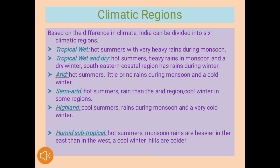The first climatic region is tropical wet: hot summers with very heavy rains during monsoon. Number two, tropical wet and dry: hot summers, heavy rains in monsoon, and a dry winter; the southeastern coastal region has rains during winter. Number three, arid: hot summers, little or no rains during monsoon, and a cold winter. Number four, semi-arid: hot summers with more rain than the arid region, and cool winters. Number five, highland: cold summers, rain during monsoon, and a very cold winter. Number six, humid subtropical: hot summers, monsoon rains are heavier in the east than in the west, a cold winter, with hills being colder.